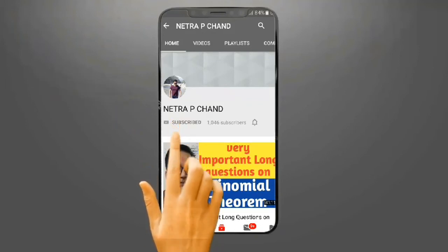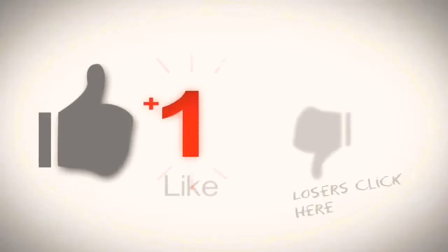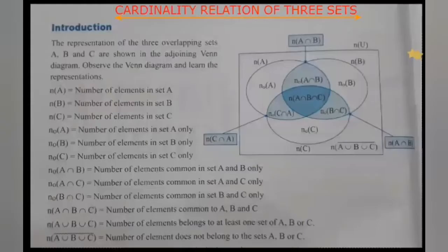Subscribe now and press the bell icon to never miss an update. Hello guys, this is Pigeon. Today we have the topic: cardinality relation of three sets. If we have three sets, how do we derive the formula and how do we make the Venn diagram? Today we will learn about these things. Let's look at the introduction to cardinality relation of three sets.